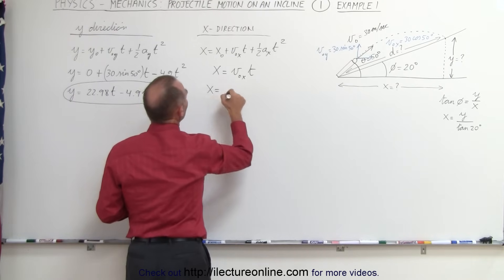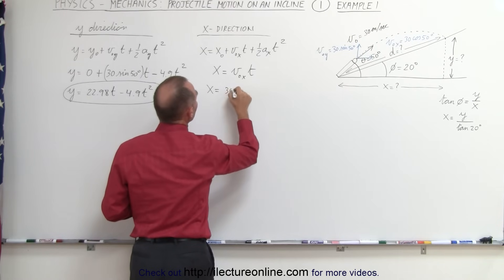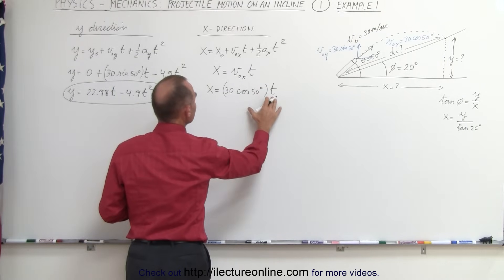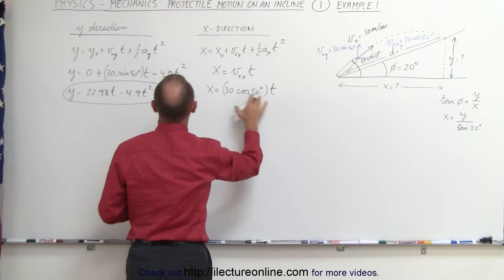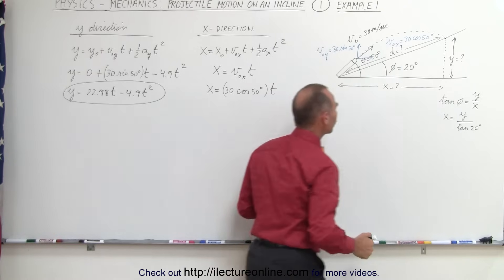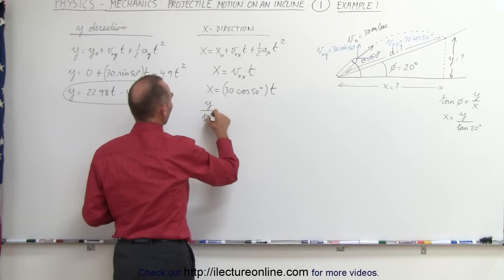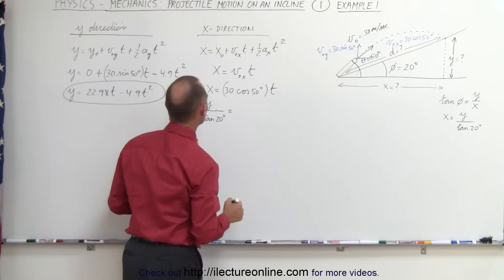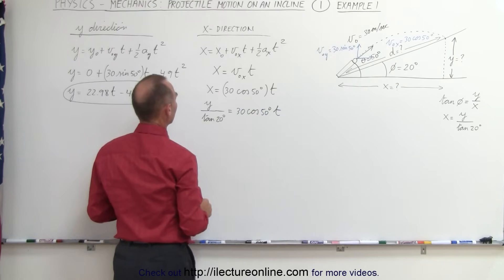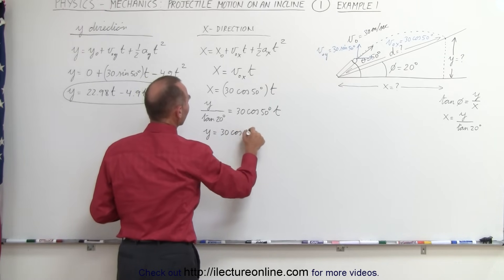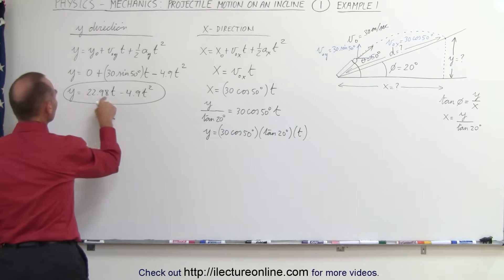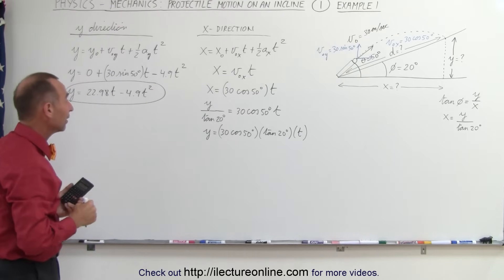Plugging in, x equals 30 times cosine of 50 degrees times t. Now there's a relationship: x can be replaced by y divided by tangent of 20. So we can say y divided by tangent of 20 degrees equals 30 times cosine of 50 degrees times t, which rearranges to y equals 30 times cosine of 50 degrees times tangent of 20 degrees times t. Since we now have two expressions for y, we can set them equal to each other and solve for t.